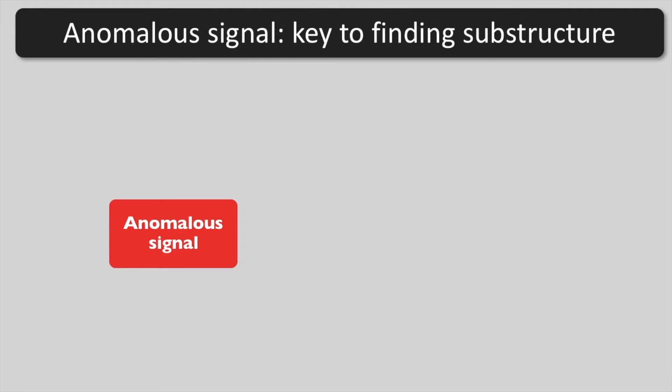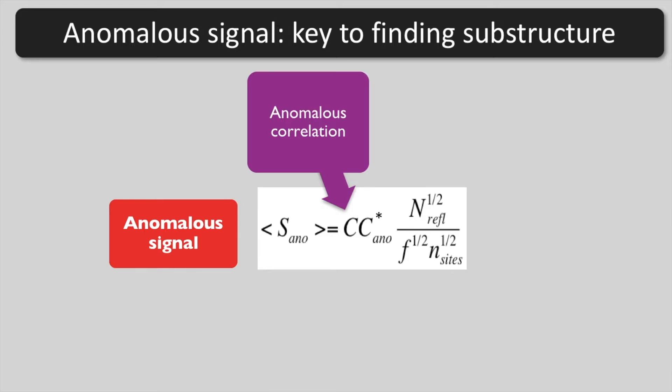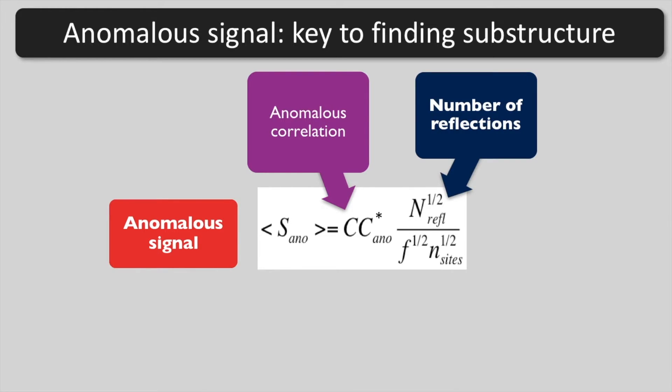The anomalous signal is the key to finding the substructure. Here are the things that are going to determine your anomalous signal S. S is proportional to the anomalous correlation. It is proportional to the square root of the ratio of the number of reflections to the number of sites.